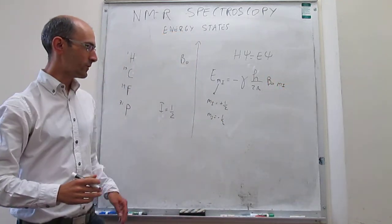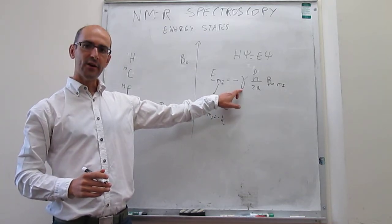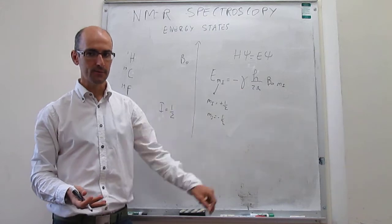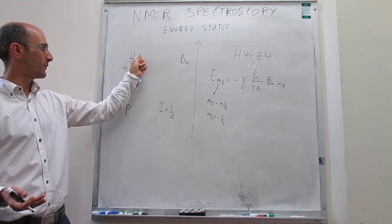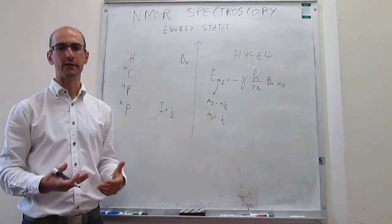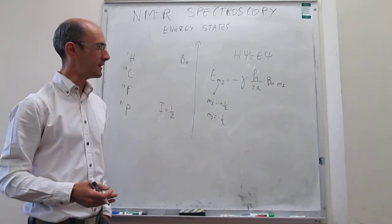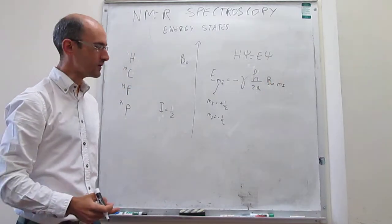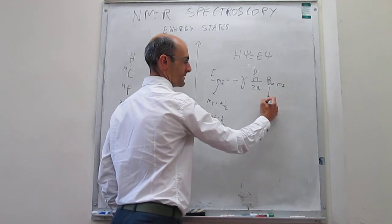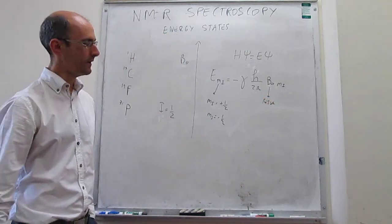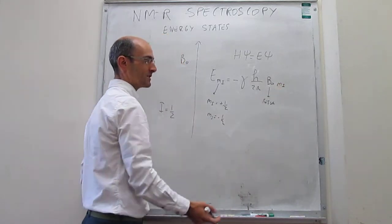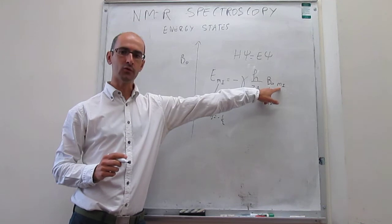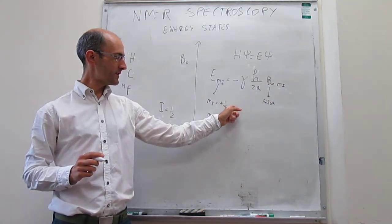Gamma is called the gyromagnetic ratio and it depends on every nucleus — it will be a constant which is different for the proton, carbon-13, fluorine-19, phosphorus-31, and so forth. There are tables and this data will be provided to you. h over 2π involves Planck's constant, B-naught is the external magnetic field with units of Tesla, and m_I is the nuclear spin quantum number. Because you only have two ways to spin — towards the field or against the field — the possible values are plus one-half and minus one-half.